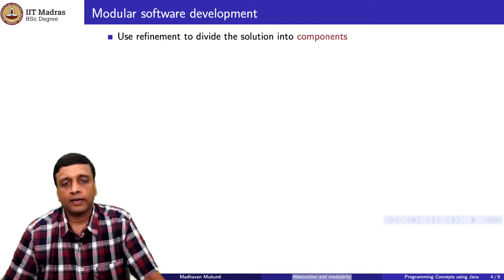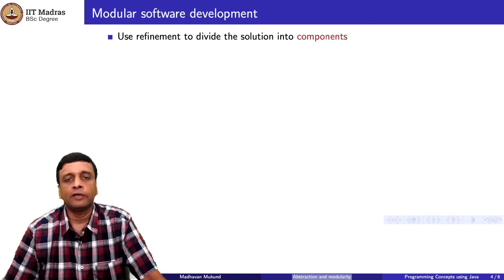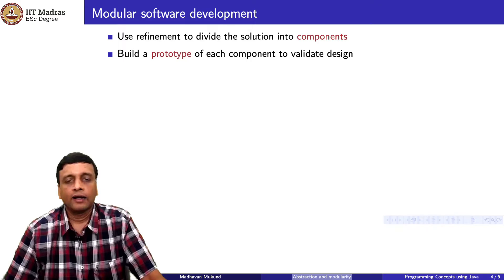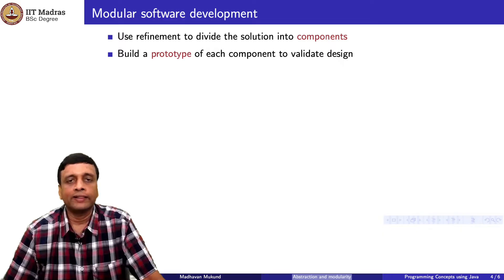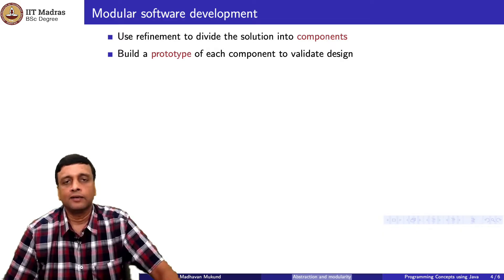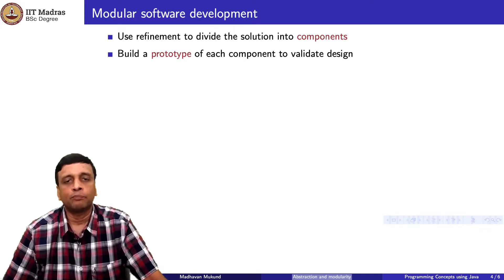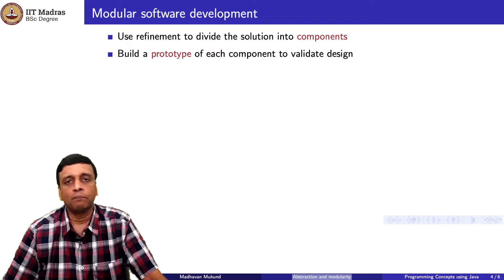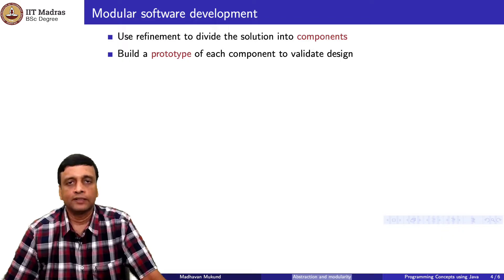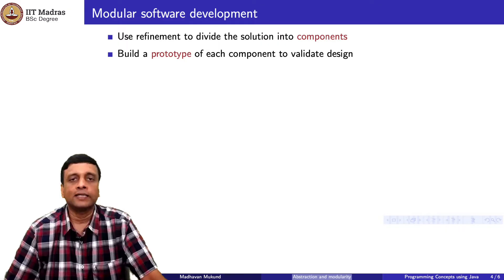These are broad guidelines. In general, our aim when building complex software is to use refinement to divide the solution into components. The advantage of defining these components in a suitably modular way is that we can then start with a prototype — a simple implementation of each component — and check that this simple implementation fits together to achieve the task at hand. The simple implementation is not our final one; it may not be fast enough or scalable enough. But it will justify that all the functionality we expect from our system is correctly captured through our design.